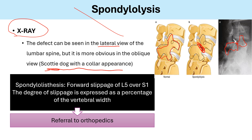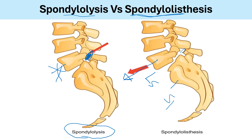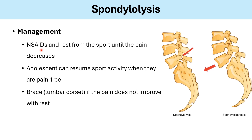The difference between spondylolysis and spondylolisthesis: spondylolisthesis is the same as spondylolysis but with forward slippage of L5 over S1, requiring referral to pediatric orthopedics. In spondylolysis, there is a defect in the pars interarticularis without forward slippage. In spondylolisthesis, there is a stress fracture plus forward slippage of L5 over S1. Management: NSAIDs such as ibuprofen, rest from sport until pain-free, then return to sport. Use a brace or lumbar corset if pain does not improve with rest.